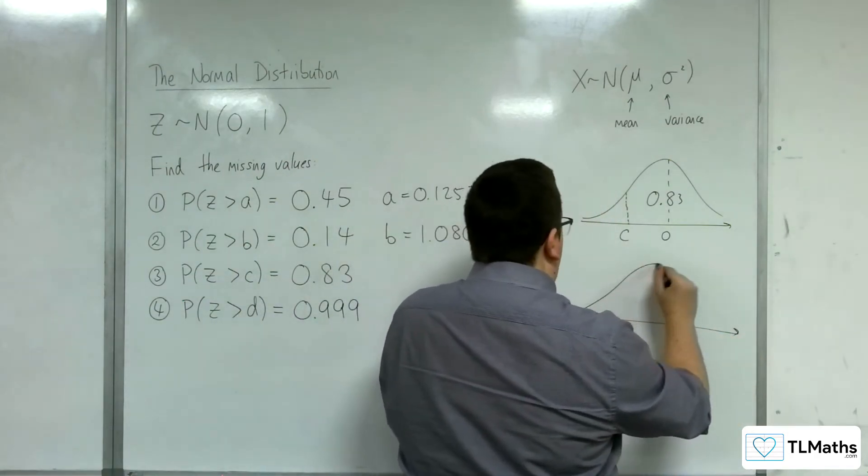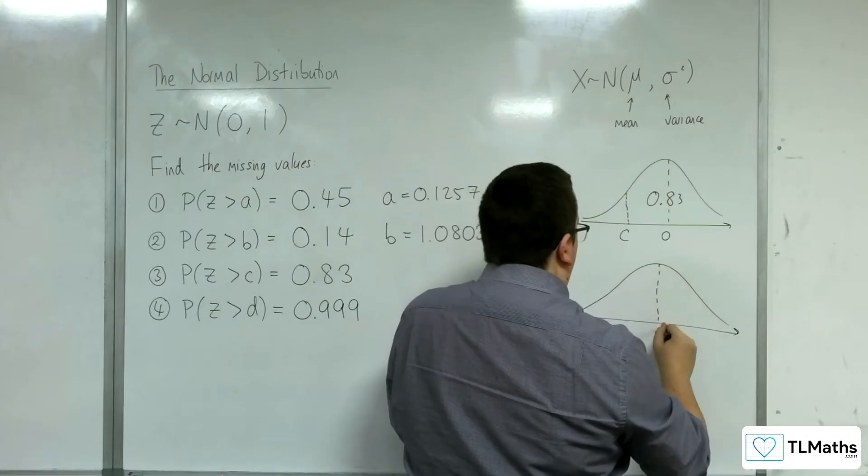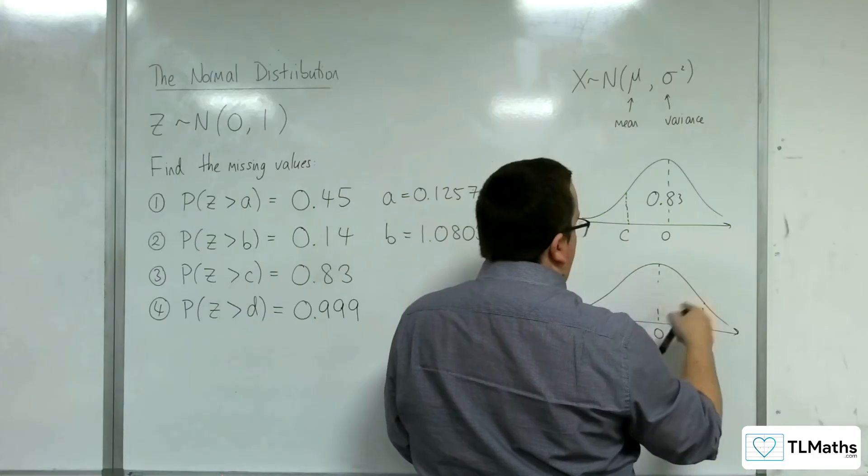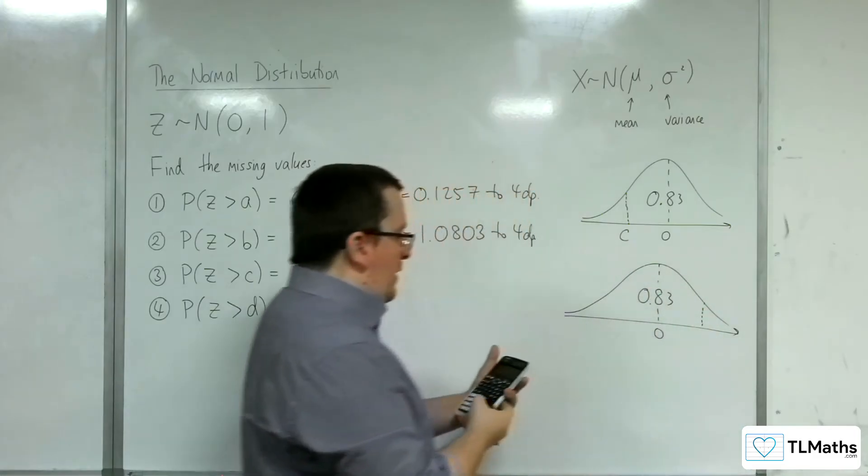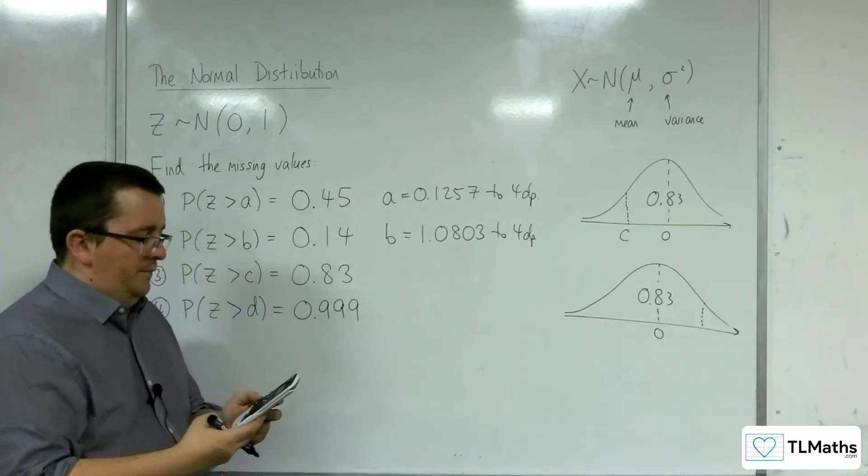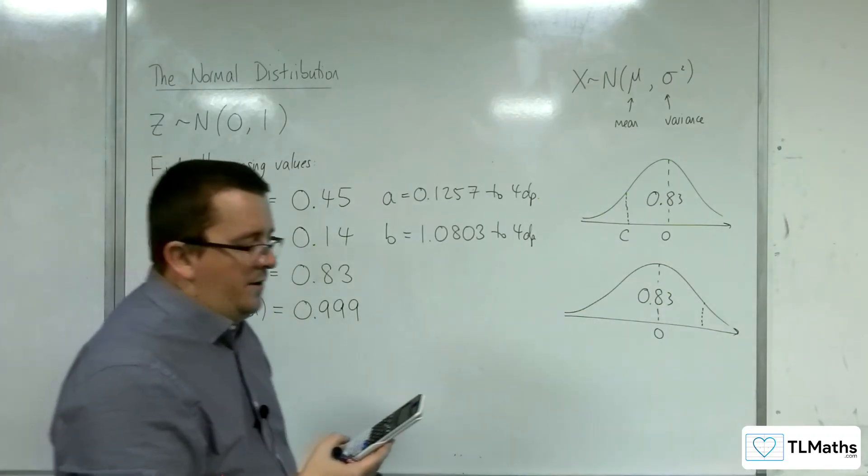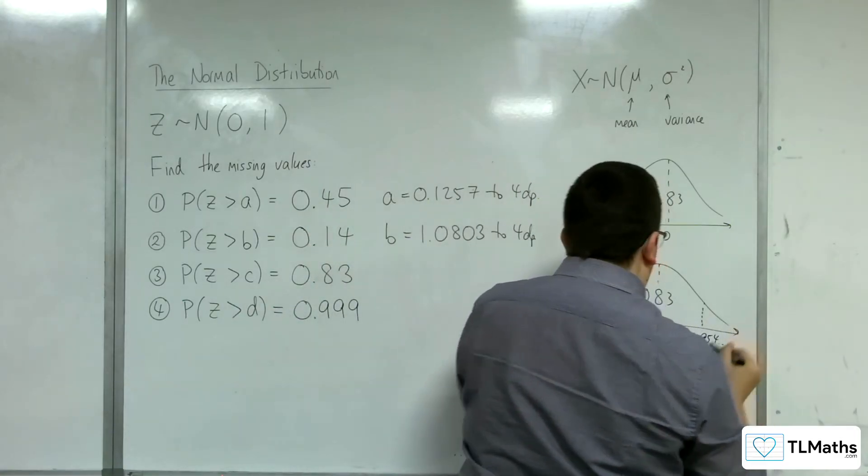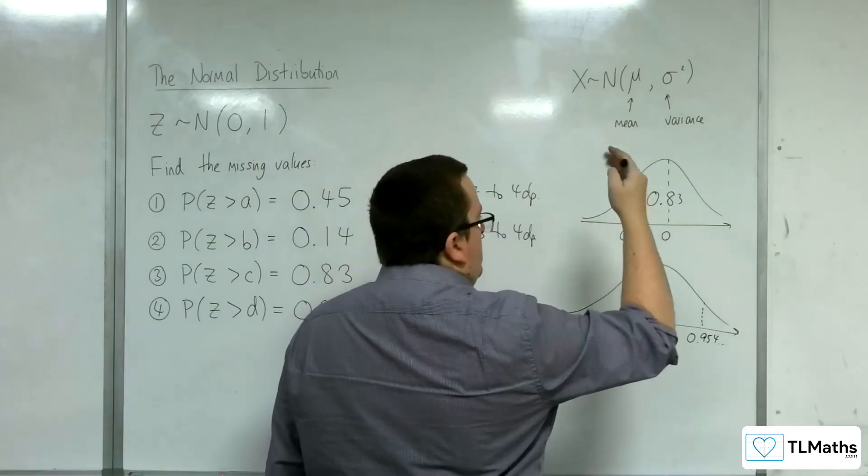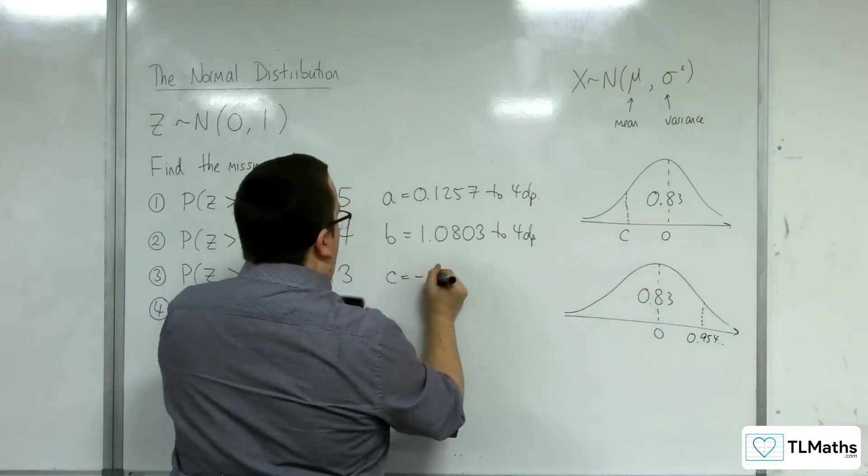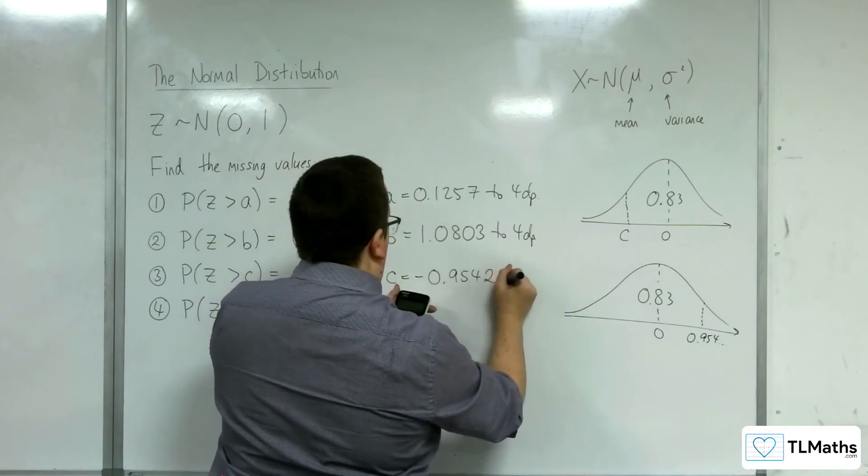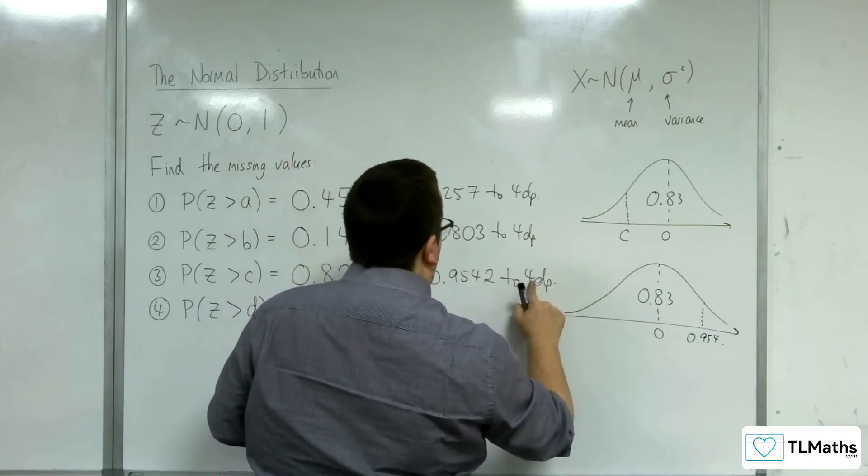You need to consider the mirror image instead. If I look at the mirror image, the value is on the right-hand side with area 0.83. Looking up 0.83 gives 0.95416. So C, being the mirror image, must be negative: -0.9542 to 4 decimal places.